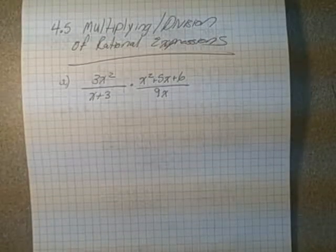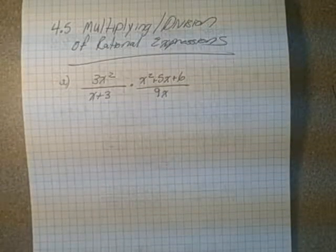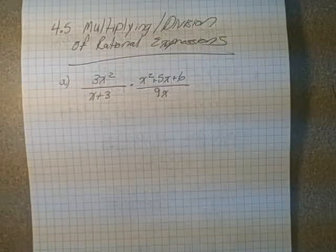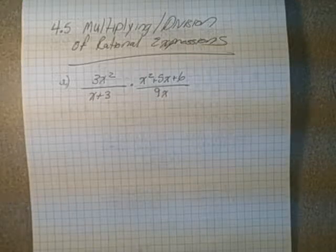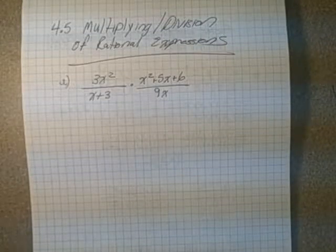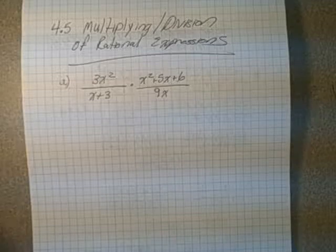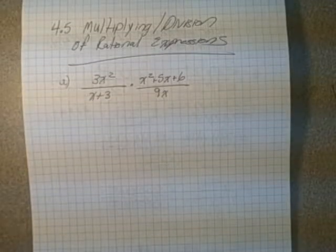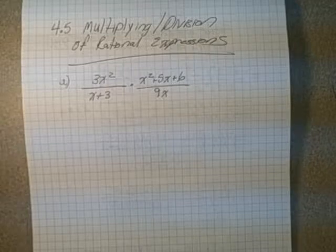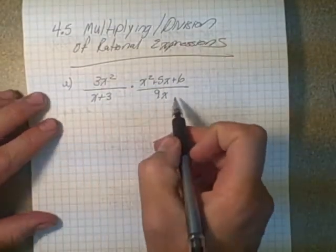This tutorial covers section 4.5, multiplication and division of rational expressions, split into two parts. Before starting any work, you must factor completely everything first. Once everything is factored, you can start reducing numerators and denominators. For division questions, you flip because dividing is the same as multiplying by the reciprocal.